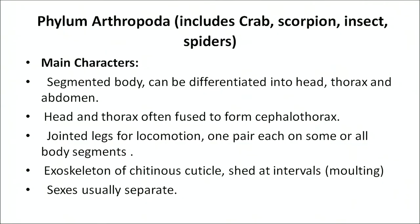The next phylum is phylum Arthropoda, which includes crabs, scorpions, insects, and spiders. These animals have a segmented body differentiated into head, thorax, and abdomen. Head and thorax are often fused to form a cephalothorax. They have jointed legs for locomotion — one pair each on some or all body segments. Their exoskeleton is made of chitinous cuticle shed at intervals — this process is called molting. Sexes are usually separate.